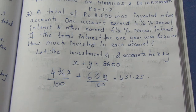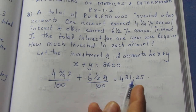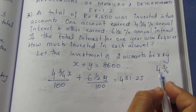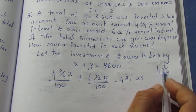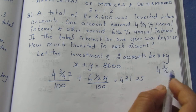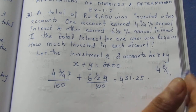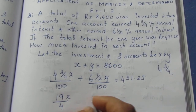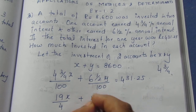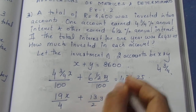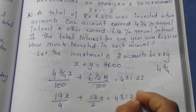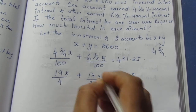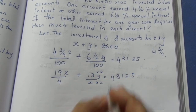First, multiply through by 100. Now convert 4¾ to an improper fraction: 4 fours are 16, plus 3 is 19, so it becomes 19/4. Similarly, 6½: 2 twos are 12, plus 1 is 13, so it becomes 13/2. This is the first equation.